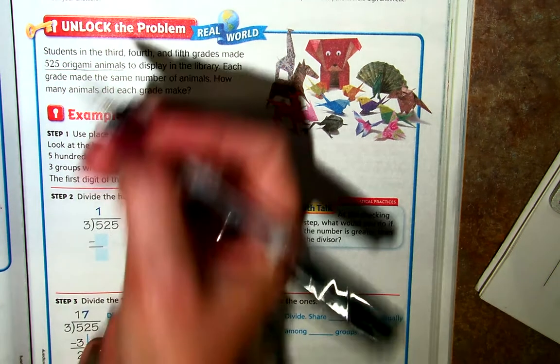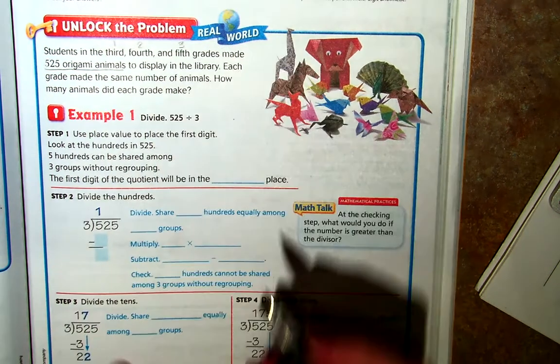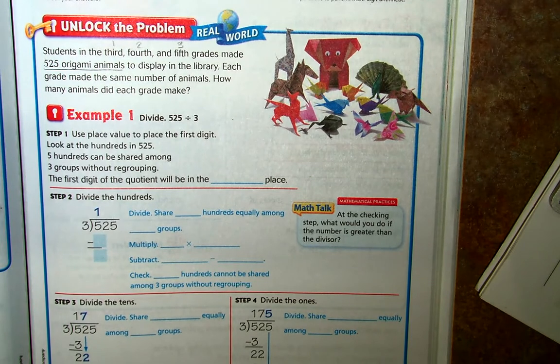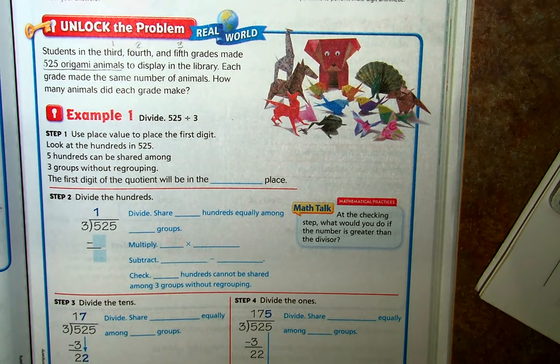I see one, two, three, and so there are three different grades, three different groups of kids who made those 525 origami animals to display.